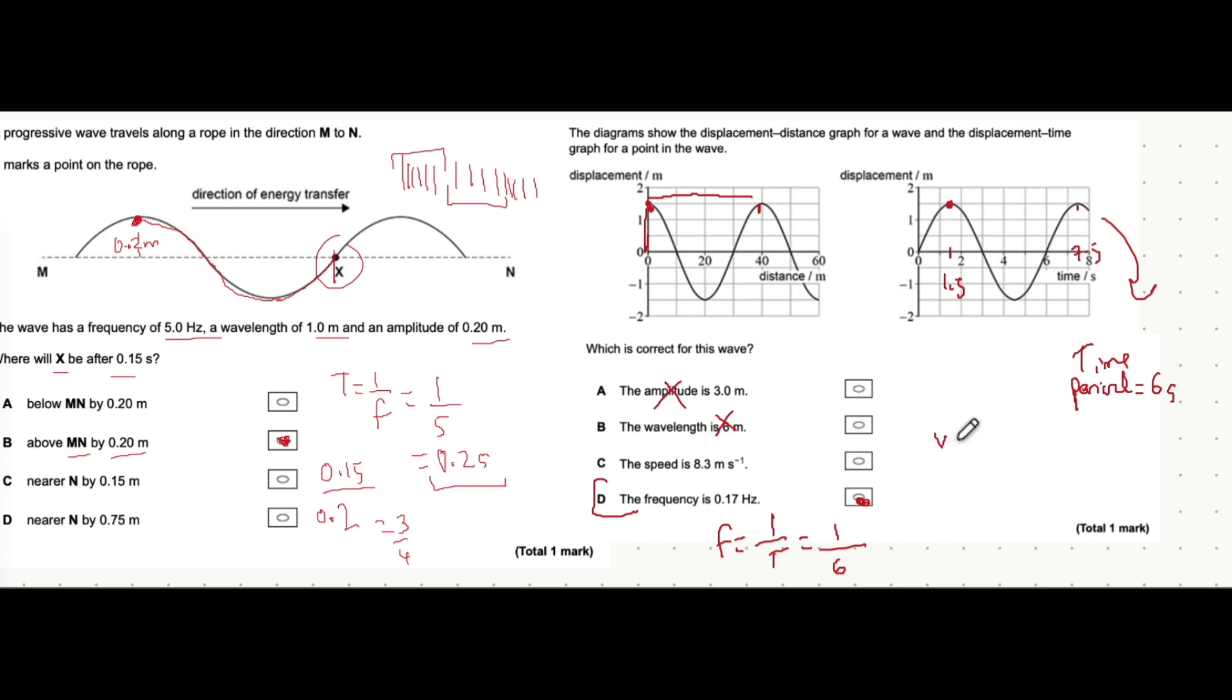But let's have a little talk about why it's not C. The speed of a wave, it looks like you're going to have to find the frequency and divide it by the wavelength. The frequency is 1 over 6. We calculated that in part D. If you divide that by the wavelength, the distance between two successive peaks is 40 meters.